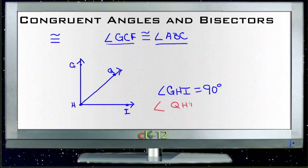So angle QHI is 45 degrees and angle GHQ is 45 degrees. They would be 45 degrees because angle GHQ and angle QHI are both bisectors, or both represent one half of GHI, because line HQ right here is the bisector for angle GHI.